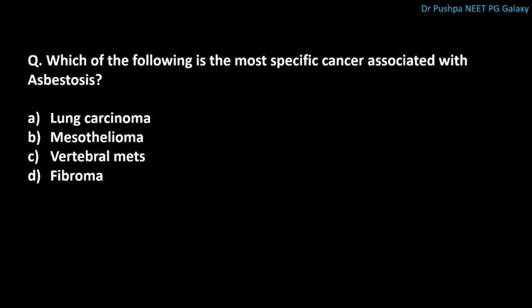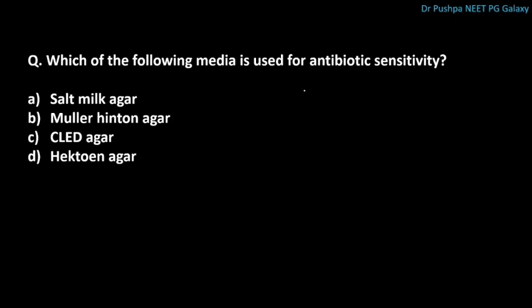Which is the most specific cancer associated with asbestosis? The correct answer is mesothelioma. The most common cancer associated with asbestosis is lung carcinoma. Which medium is used for antibiotic sensitivity? The correct answer is Mueller-Hinton Agar.